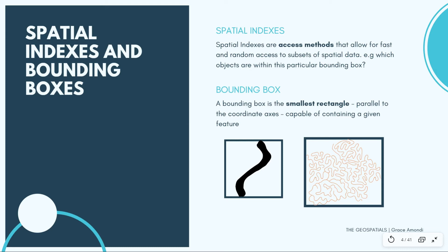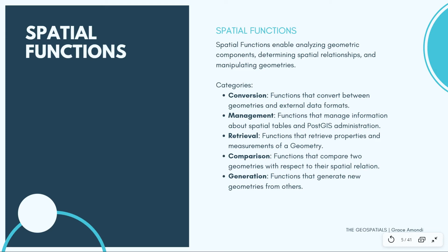A bounding box is the smallest rectangle that is able to contain a feature and it should be parallel to the coordinate axis. Spatial functions enable analyzing geometric components and also determining spatial relationships and manipulating geometries. These functions are written so that you can convert geometries or data formats, manage information about spatial tables, retrieve properties and measurements, compare two geometries with respect to their spatial relation and topology, and finally generate new geometries from other geometries.